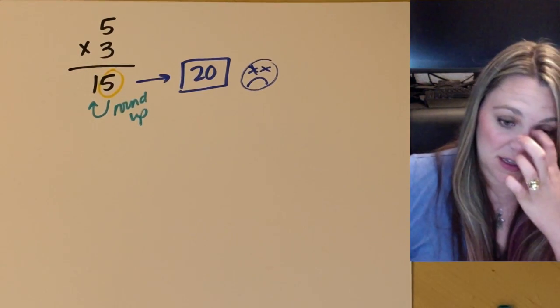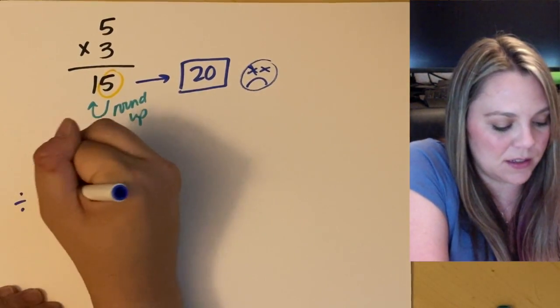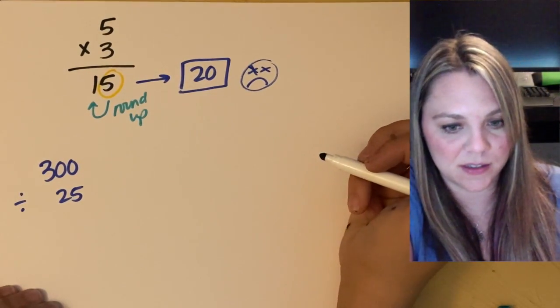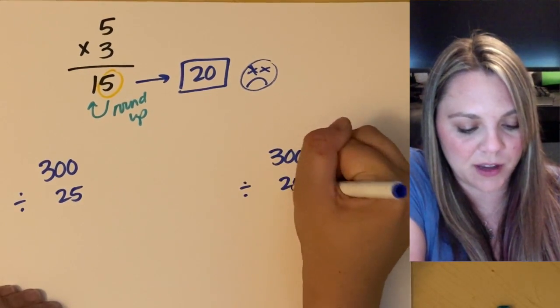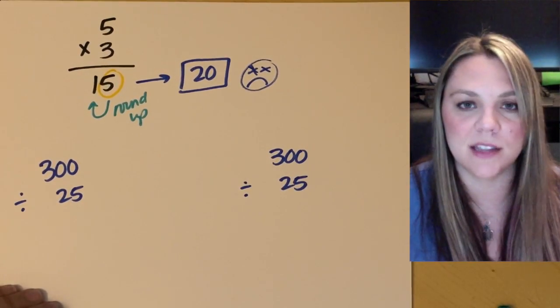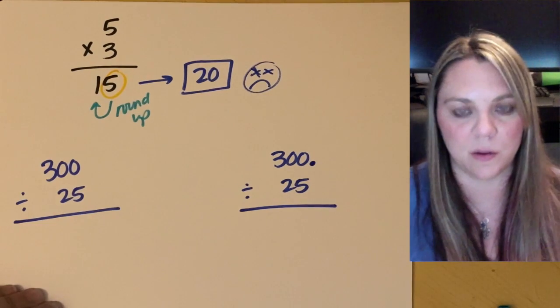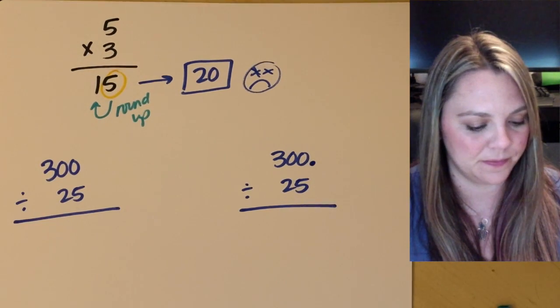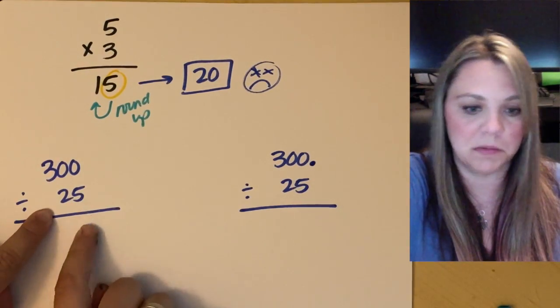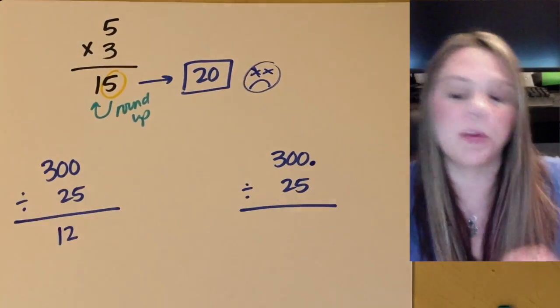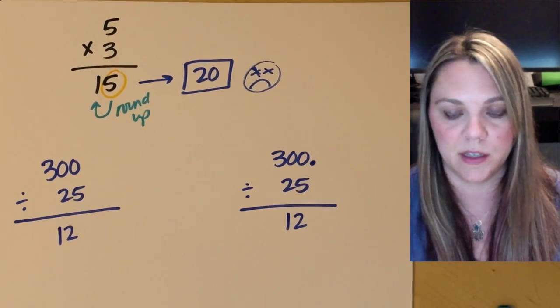We'll do two more. If I had 300 divided by 25 versus if I had 300 divided by 25. Okay? And now you're thinking, what the heck, that's the same. Okay? It's not if I have a decimal on one and no decimal on the other. All right? So if I did this in my calculator, 300 without a decimal divided by 25, it would tell me 12. If I plug this into my calculator, 300 with a decimal divided by 25, it would still tell me 12.